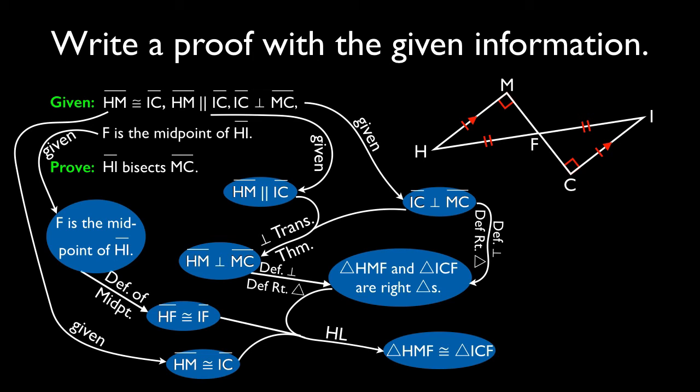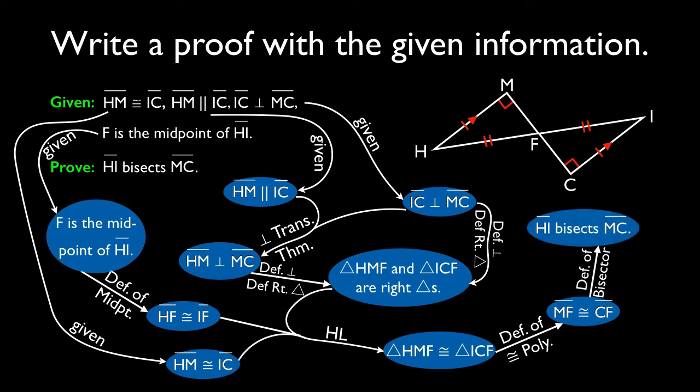Which also means that... I'm not done here. Oh. By the definition of congruent polygons, segment MF is congruent to segment CF. And by the definition of bisector, segment HI bisects segment MC.